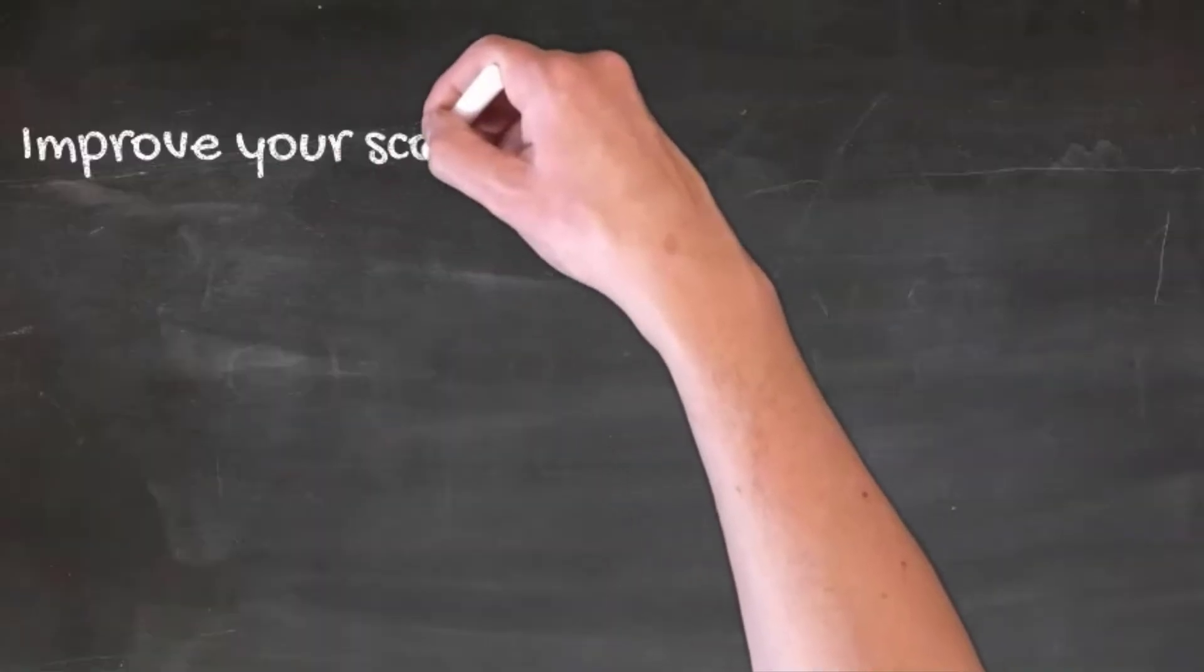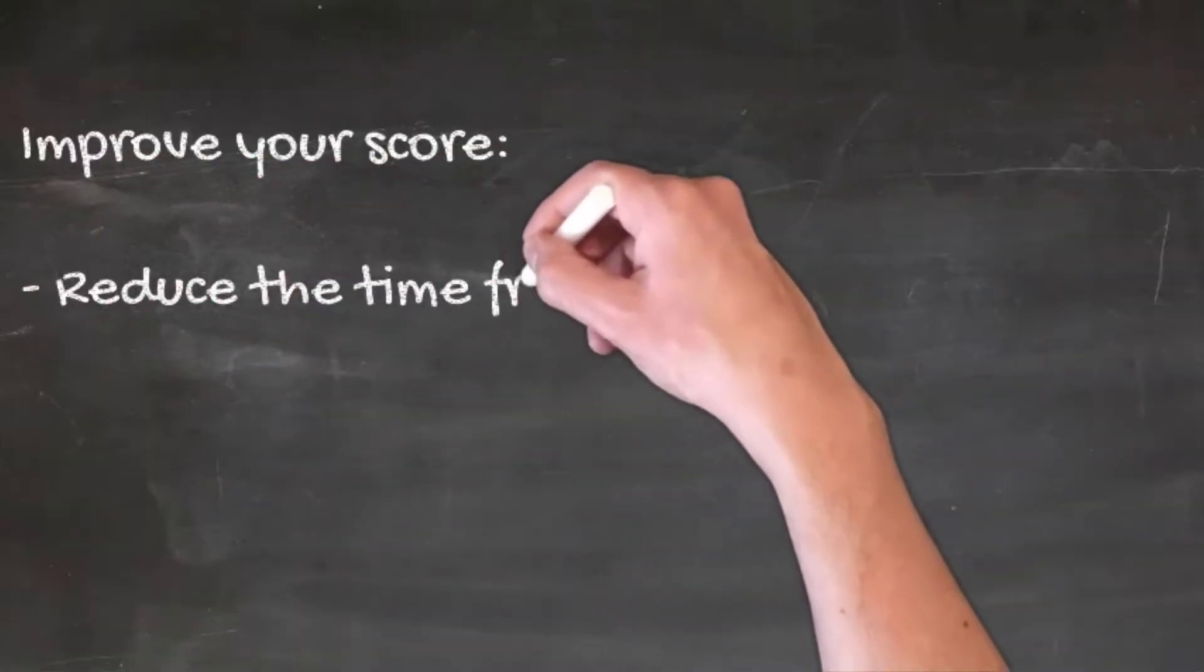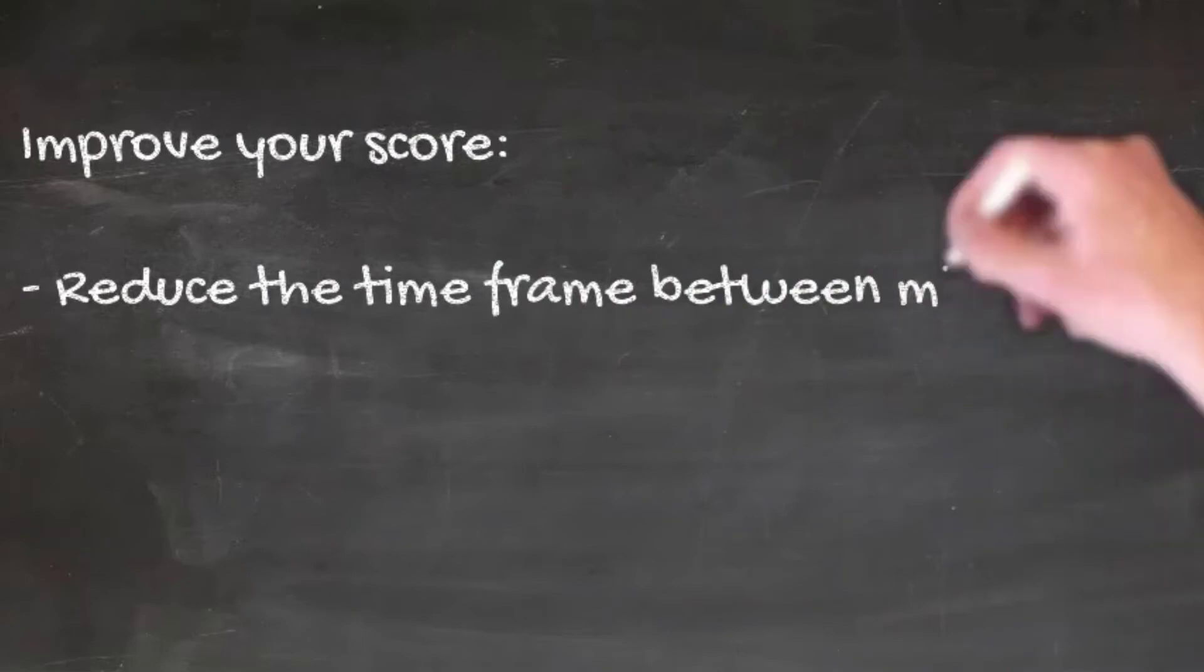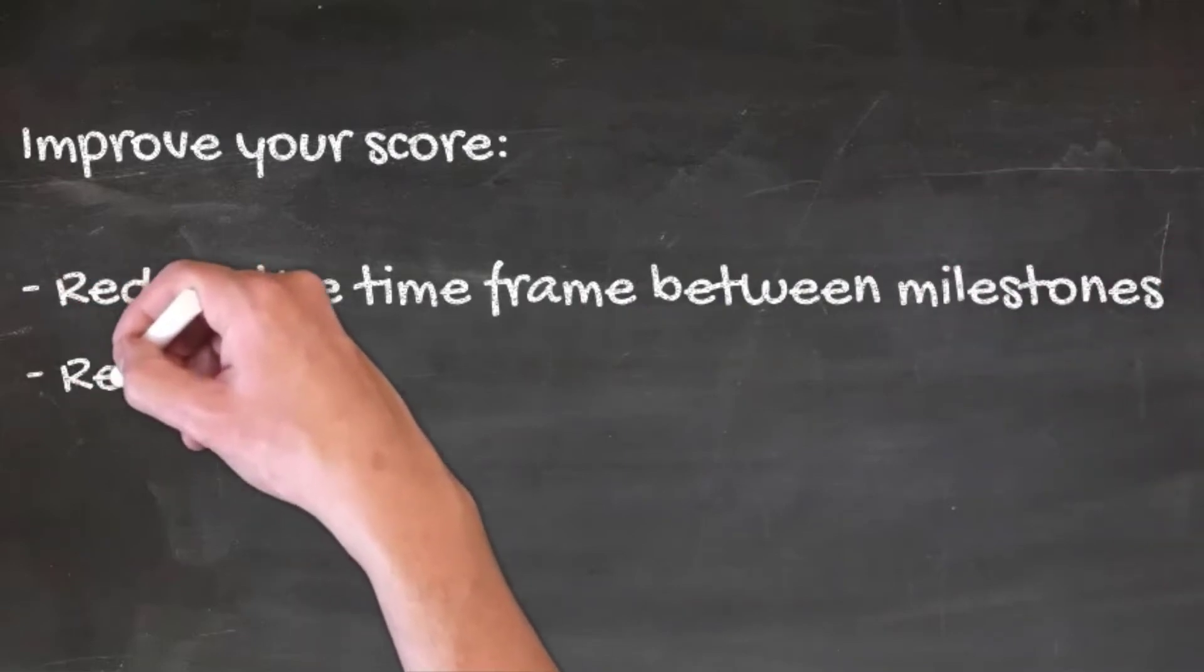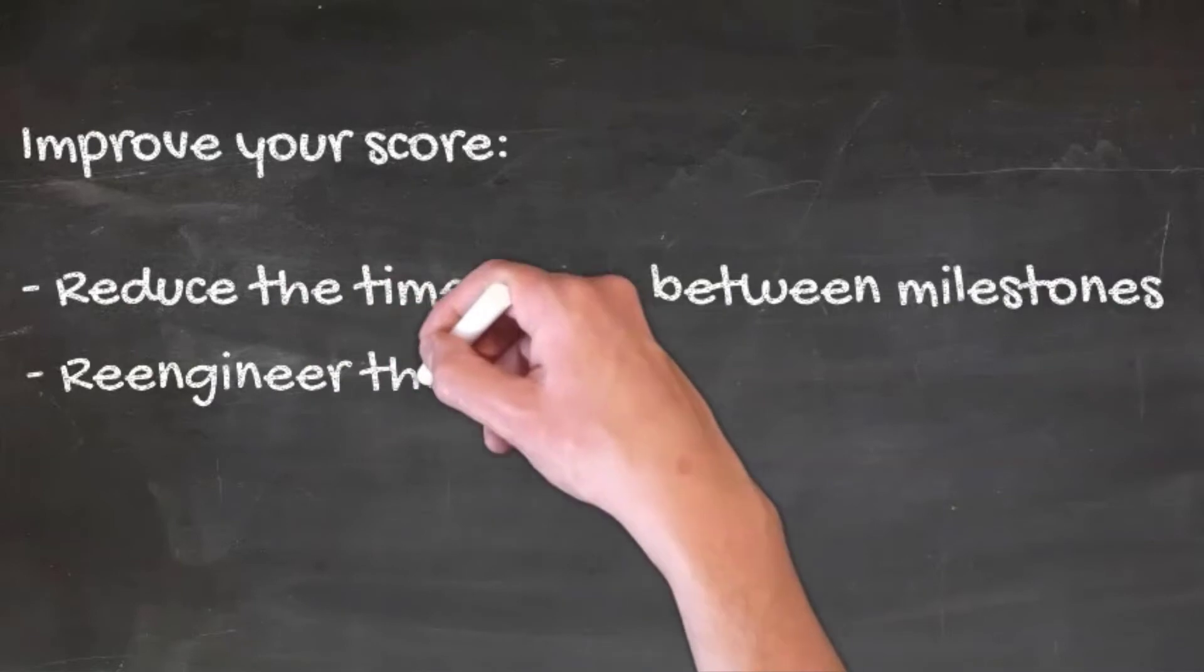Therefore, to improve your score, what you'll want to do is first reduce the time frame between said milestones. Then, you'll want to re-engineer the structure of the milestones.